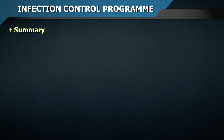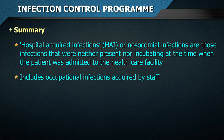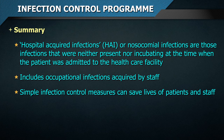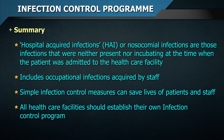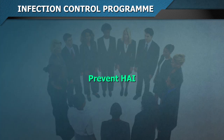In summary: healthcare-associated infections, also known as hospital acquired infections or nosocomial infections, are those infections that were neither present nor incubating at the time the patient was admitted to the healthcare facility. The majority of HAI become evident 48 hours or more following admission, and they also include occupational infections acquired by staff. Simple infection control measures can save lives of patients and staff. All healthcare facilities should establish their own infection control program. Microbiologists play a key role in infection control activities. Let us join hands and do our best to prevent HAI, because human life is priceless.